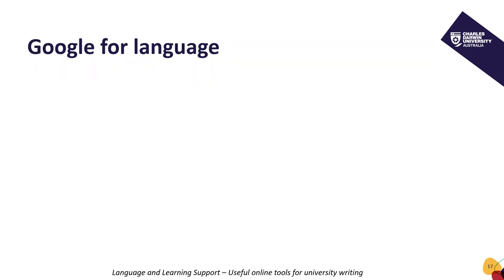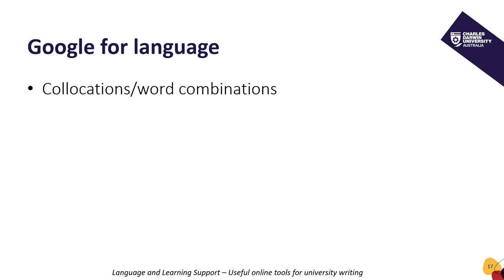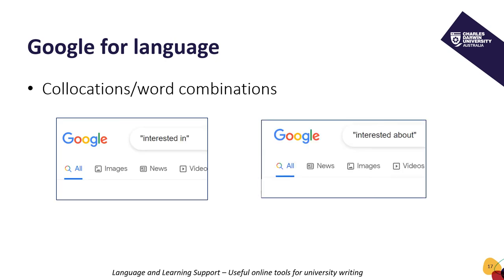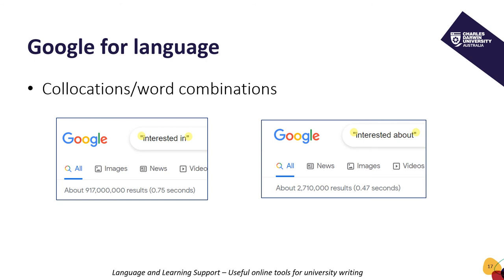Google can be a very useful tool, particularly if we want to check collocations or word combinations. Using Google for this purpose is not an exact science, but Google can give us a quick and easy understanding of frequency and therefore offer clues about what is correct or incorrect. Consider prepositions which often cause confusion. Perhaps I need to check: should I say 'interested in' or 'interested about'? I search for each expression using quotation marks so that my search is specific. The expression with the highest tally is most likely the correct version. Here we see that Google has over 900 million results for 'interested in' and only 2.7 million for 'interested about', so we would select the first option.